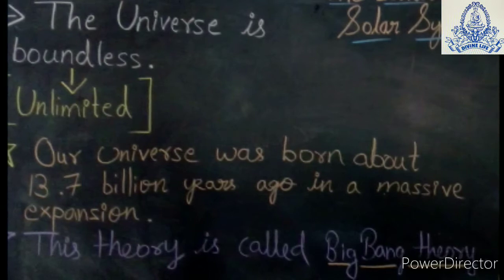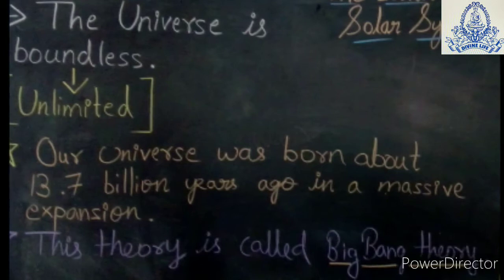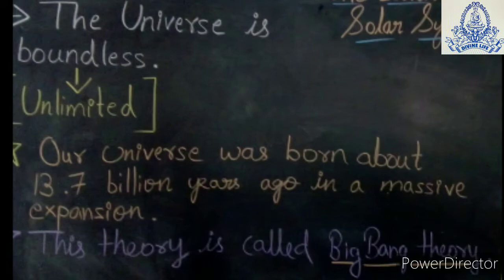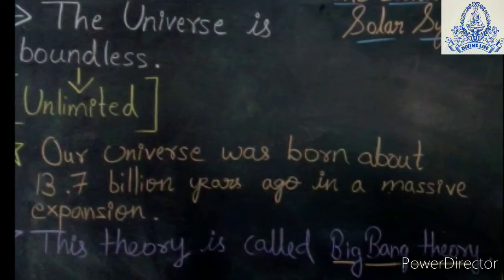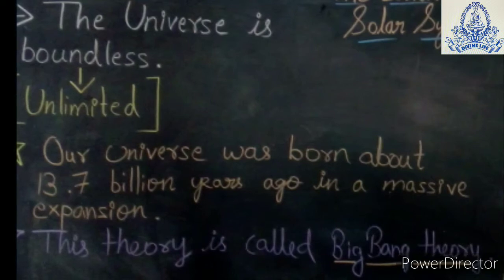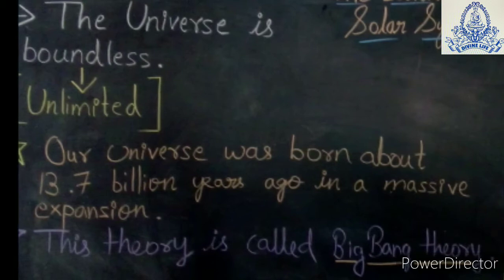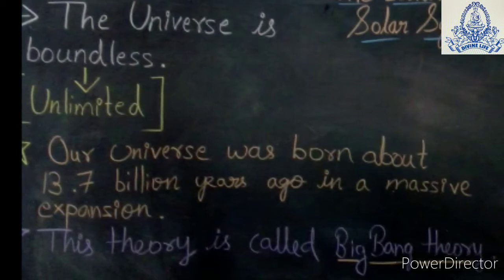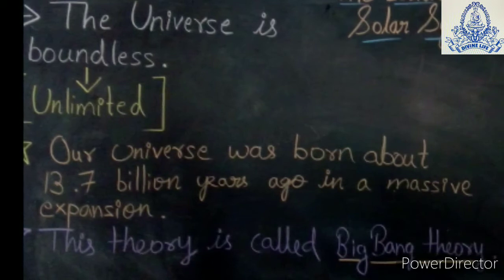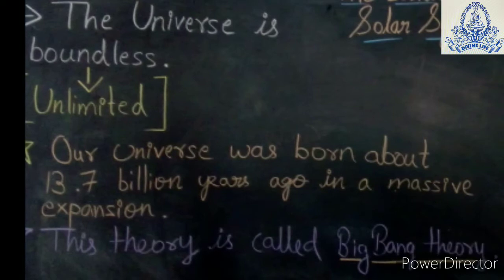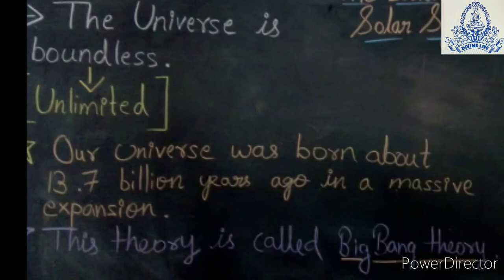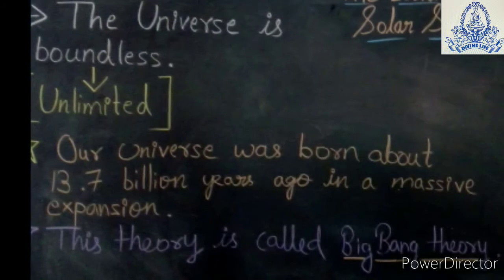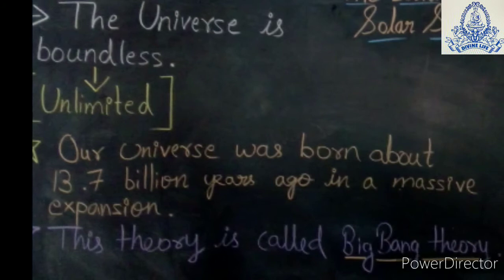The Big Bang Theory explains how the birth of the universe took place. The sources revealed that the matters — gases, dust particles, and all other elements — contained in a huge burning ball of fire exploded, which we can also say blasted. With that blast, lots of elements were thrown out with great force in all directions.